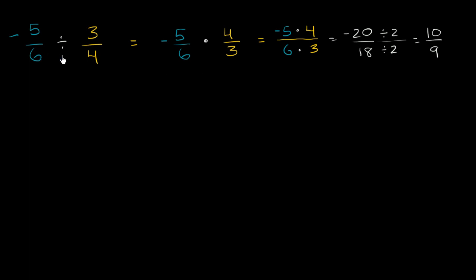So negative 5/6 divided by 3/4 is, oh, I have to be very careful here. It's negative. Negative 10/9. Just how we always learn. If you have a negative divided by a positive, if the signs are different, then you're going to get a negative value. Let's do another example.